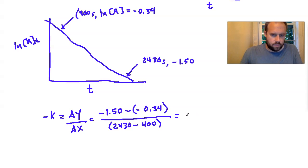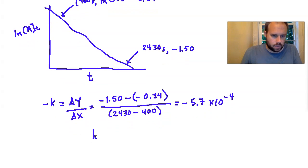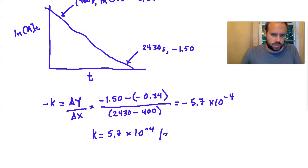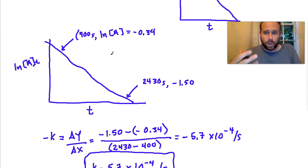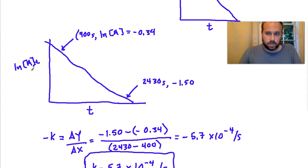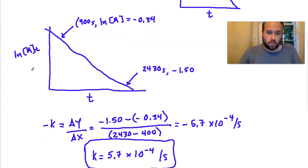Solving that gives negative 5.7 times 10 to the negative fourth, which equals negative k. So the rate constant k equals 5.7 times 10 to the negative fourth per second. This is useful because we can measure concentration and time fairly easily in a lab, but it's not easy to directly measure a rate constant. Concentration change over time allows us to find k from experimental data.